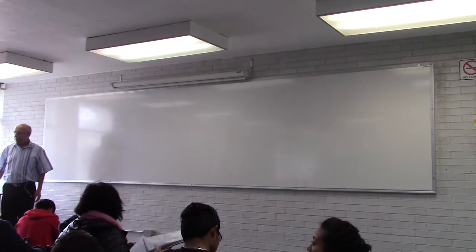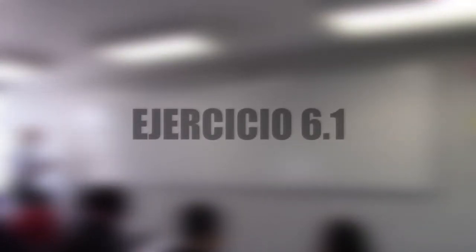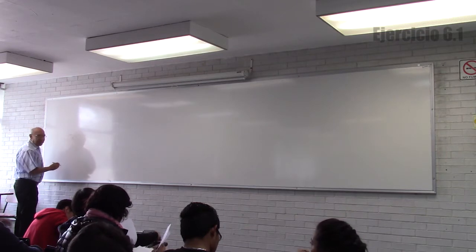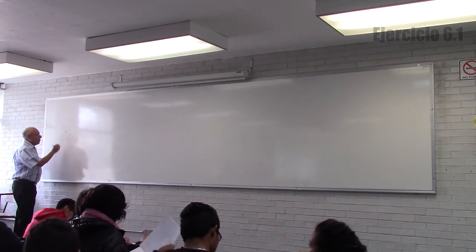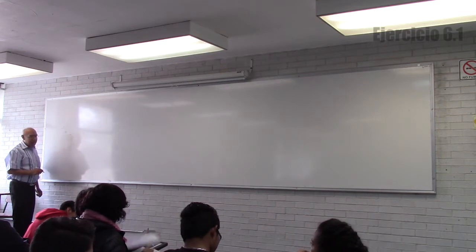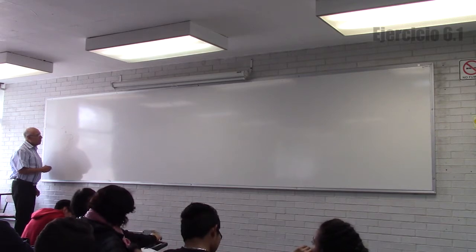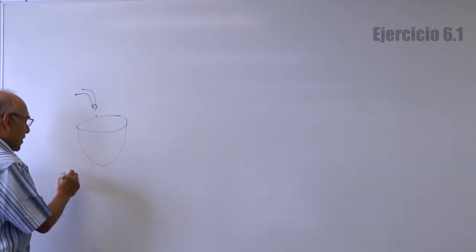Ayer un joven llegó y me preguntó un problema y quisiera platicar ese problema. El problema es el siguiente: se tiene una vasija vacía, por ejemplo esta, y está entrando agua a cierta velocidad. La rapidez con la que entra es una función. Entonces, me dicen cuál es la cantidad de agua que hay en cierto intervalo de tiempo.